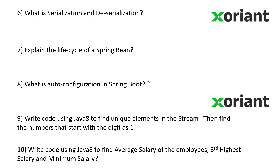Now coming to the coding questions. The first coding question was: given a stream of numbers, find the unique elements in the stream. You can either use a HashSet or use the distinct method that is already predefined. After this, the interviewer asked the candidate to filter the numbers by even — all even numbers should be present after the unique element step — and then filter again to find numbers that start with the digit one.